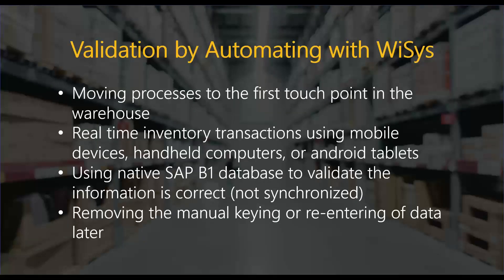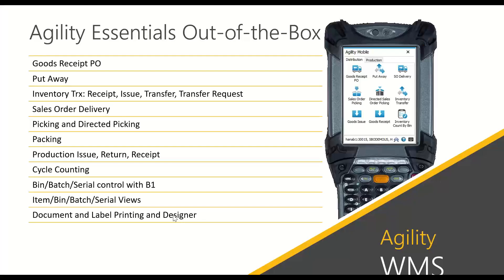We want to validate automations with Wysis. We want to achieve validation by automating functions within Wysis WMS. We want to take manual processes and move them out to the first touch points in the warehouse. We want to do real-time and accurate inventory transactions using mobile devices, tablets, and handheld computers — really getting into the use of technology to validate by automating processes in your warehouse. By creating accuracy and validation with every transaction or movement that takes place, we're going to eliminate things like manual keying of orders, reentering data at a later time. We want real-time inventory control.